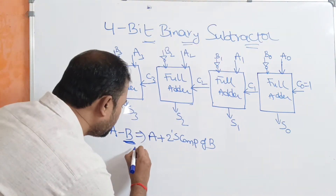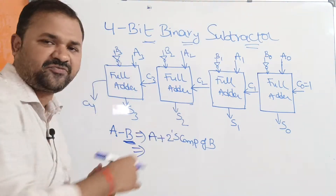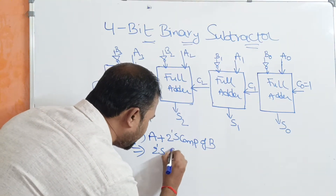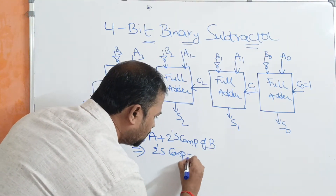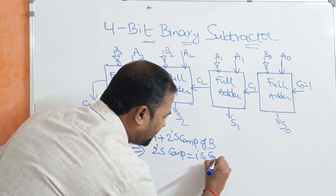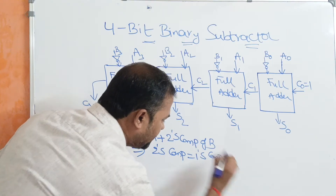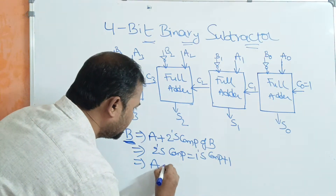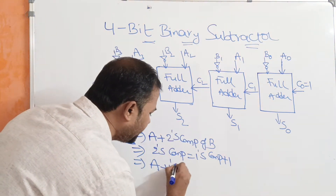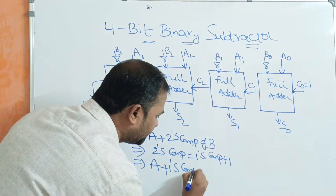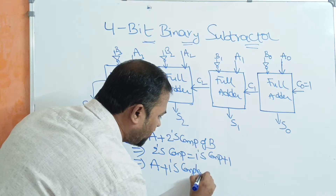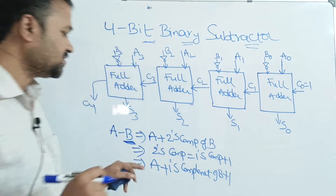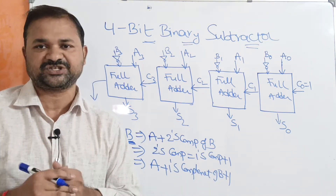We know how to calculate the 2's complement of a number. The 2's complement of a number equals 1's complement plus 1. So here, A plus the 2's complement of B means we have to calculate the 1's complement of B and then add 1 to it. So we have to perform this operation.